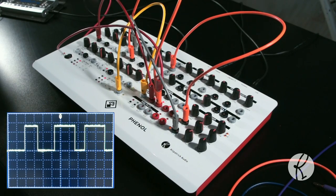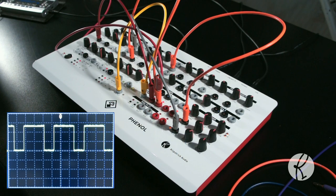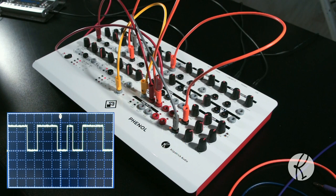The divider is a useful section that makes Phenol into a little bit of a rhythm machine. Try taking the divider outputs and pinging the inputs of the filters with them. This can be used to create tuned percussive sounds.